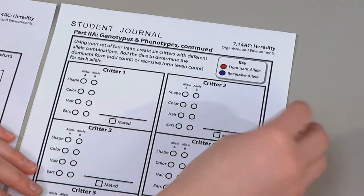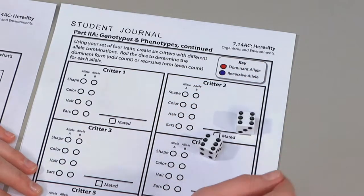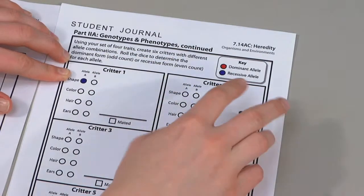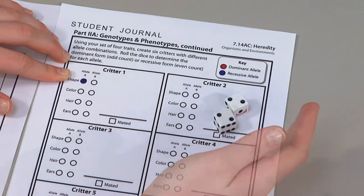Use a pair of dice to reinforce the random yet determinate aspect of heredity. Roll twice to determine the genotype for each trait.